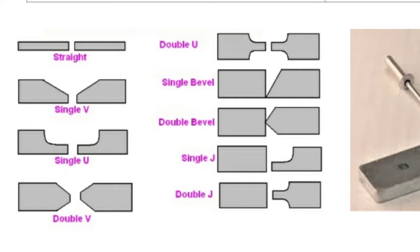Here you can see the different types of edge preparation: single V, single U, double V, double U, single bevel, double bevel, single J, double J. The edge preparation depends on the thickness of the material to be joined.